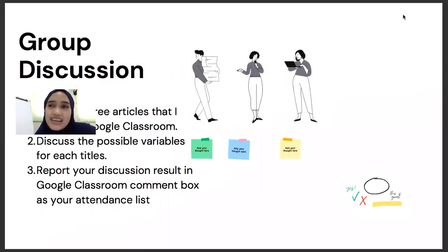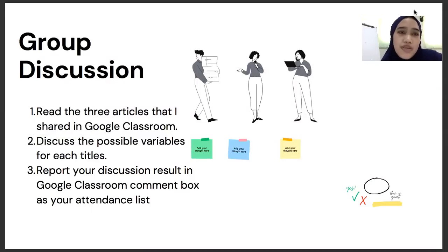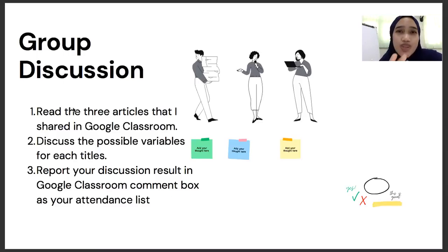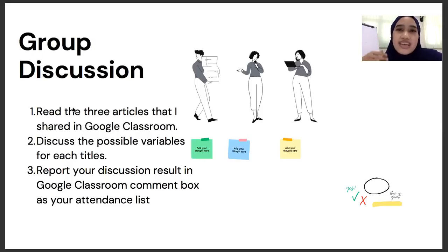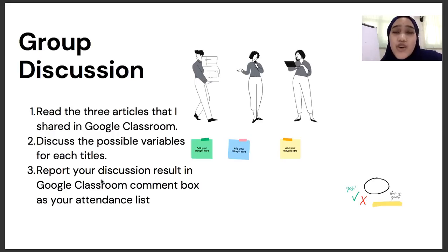Yang ketiga: Teachers' Best Practice on the Use of Kahoot to Teach Listening. Apa variablenya? Practice — practice-nya. Kalau yang pertama persepsinya, yang kedua level-nya, yang ketiga practice-nya. Semoga sudah lebih paham dengan contoh. Sekarang your job: discuss with your group on WhatsApp platform. I will provide three articles in Google Classroom — silahkan dibaca judulnya saja dulu. Discuss the possible variables — kira-kira dari tiga judul itu variablenya yang mana — and explain the reason. Report hasilnya di kolom comment Google Classroom. See you next meeting about construct. Bye-bye.